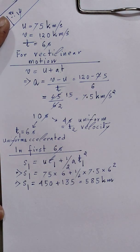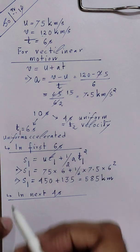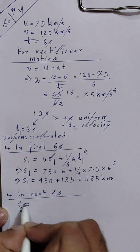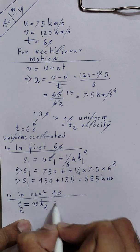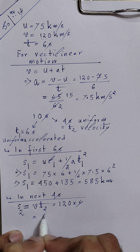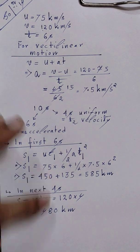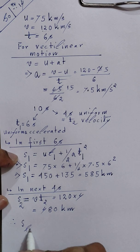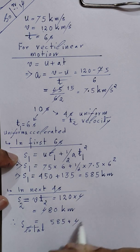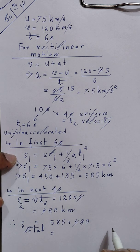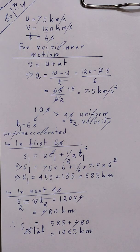In the next 4 seconds, the spacecraft moves with uniform velocity of 120 km/s. So displacement S2 = v × t2 = 120 × 4 = 480 km. The total displacement is S1 + S2 = 585 + 480 = 1065 km.